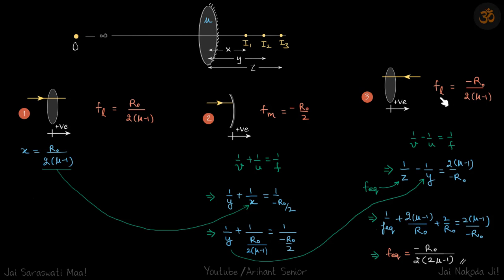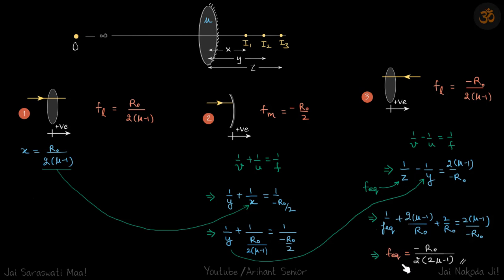After reflecting from the mirror the rays pass through the lens again. This time the focal length is −r0/2(mu−1). Applying the lens formula, 1/z − 1/y = 1/f_L. We substitute the value of y from the previous step and note that z = f_equivalent since the original object was at infinity.